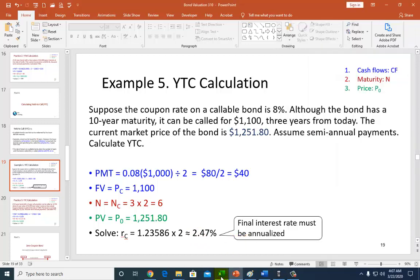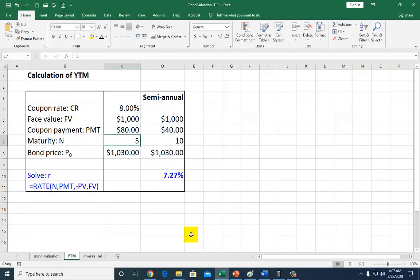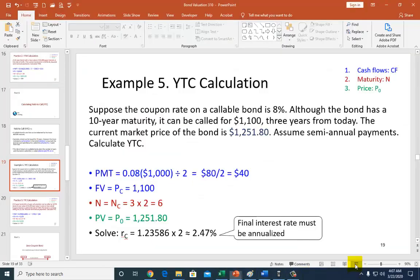And if you want to use spreadsheet to do this, you can do that too. But there are two adjustments that you're going to have to make. You're going to have to change this to the call price, and then you're going to have to change this to the number of periods. The calculations will come out to be the same.